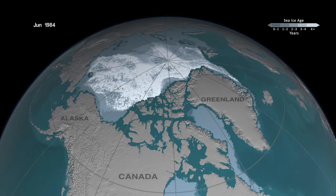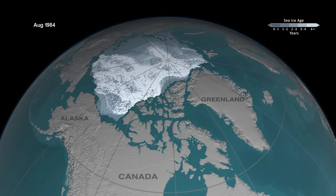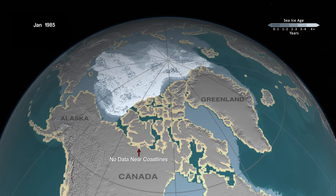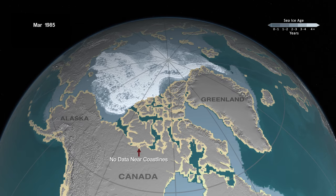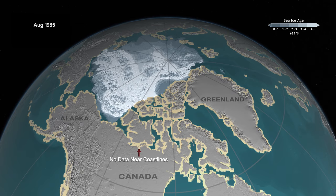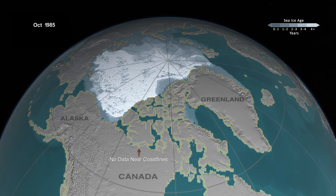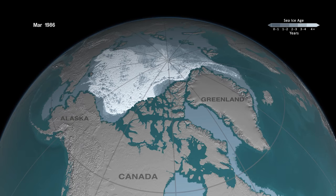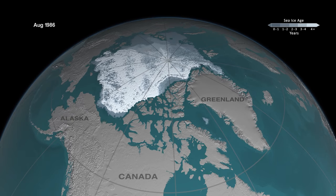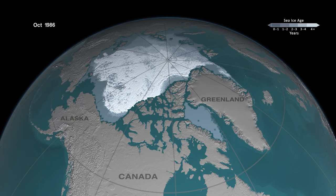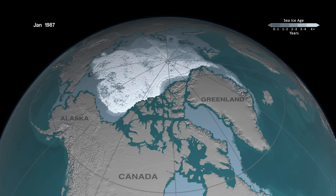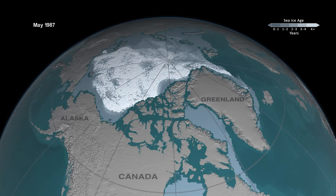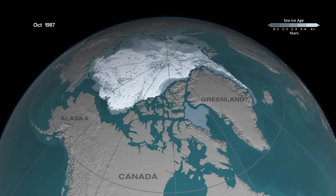In this animation, we're taking Arctic sea ice into the third dimension. Here we're looking at the ice age, which is an indicator of thickness. Generally, older ice is thicker ice. That's the voice of Dr. Walt Meier, senior research scientist at the National Snow and Ice Data Center.